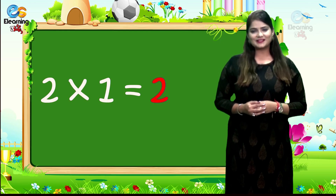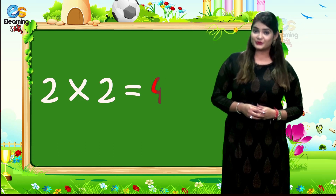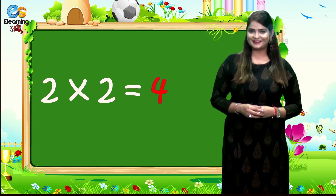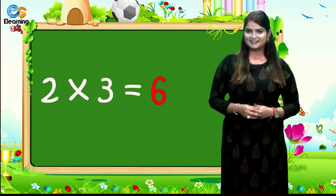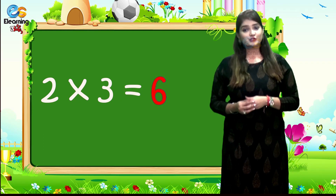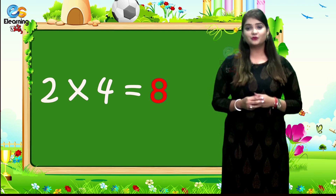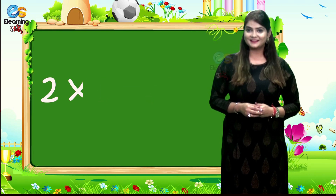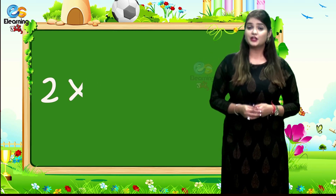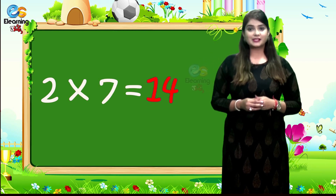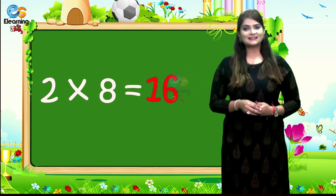2 1s are 2, 2 2s are 4, 2 3s are 6, 2 4s are 8, 2 5s are 10, 2 6s are 12, 2 7s are 14, 2 8s are 16.